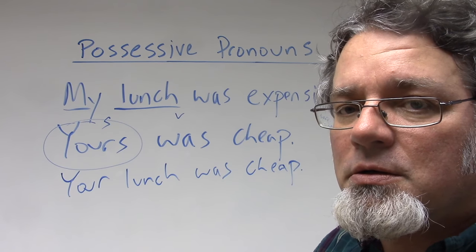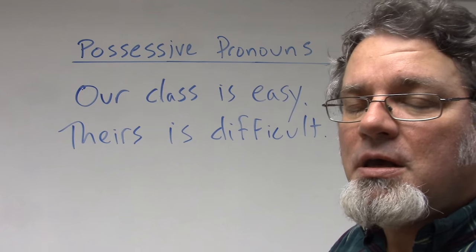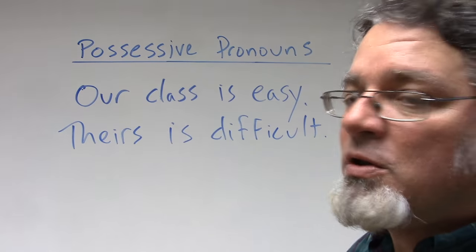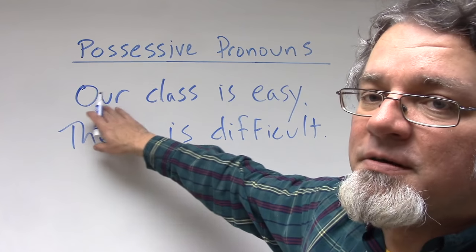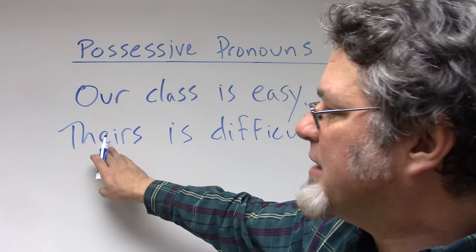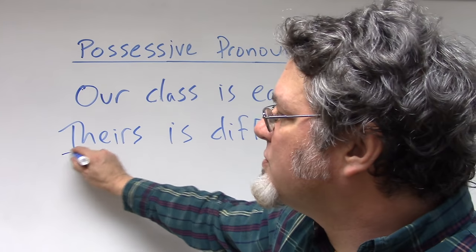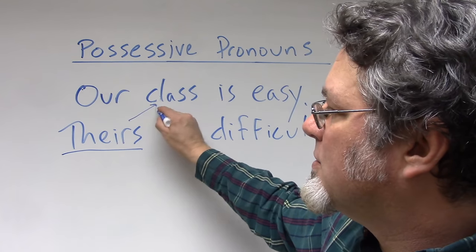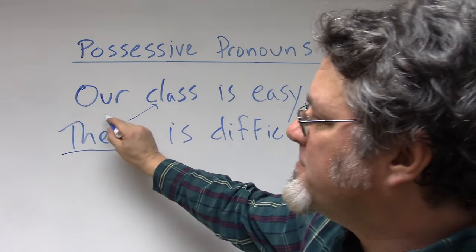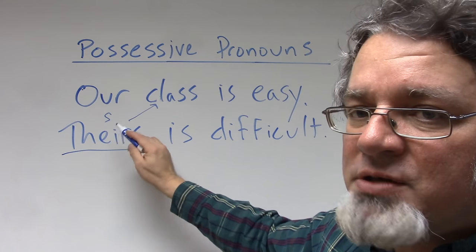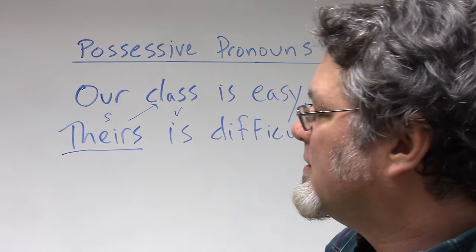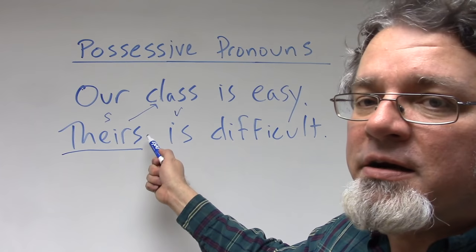'Our class is easy. Theirs is difficult.' I'm making a comparison between two classes. 'Our' is a possessive adjective in front of the word 'class.' 'Theirs' is the possessive pronoun. When I use 'theirs' here, I'm thinking about 'class,' and because this is one class as a subject, it is considered singular and has a matching singular verb.